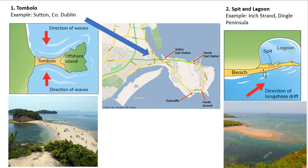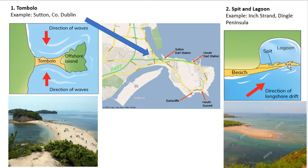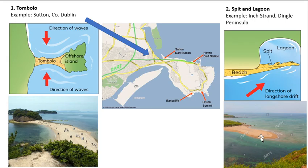The second feature of coastal deposition we must recognize is a sand spit and lagoon. A sand spit is a bar of sand that has been deposited, partially covering a bay. Longshore drift carries and deposits sand in one direction, eventually forming a little sandbar in front of our lagoon. Our example of a sand spit and lagoon in Ireland is Inch Strand in Dingle, County Kerry. The beach makes its way out, and in behind it is the lagoon. The sand spit will continue to grow and eventually make its way across the whole inlet.